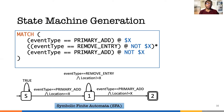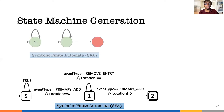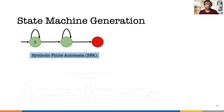In this example, S represents the start state and the state with double lines represents the final state. If the state machine reaches the final state, it means the sequence of events has occurred and the violation should be raised. To avoid focusing on the specific example, I'm going to hide the details of this specific state machine and instead use a dummy state machine, where the S node represents the start state and the red state represents the final state, meaning the violation has occurred.